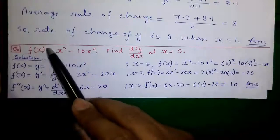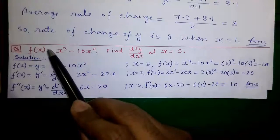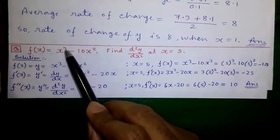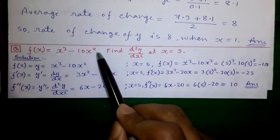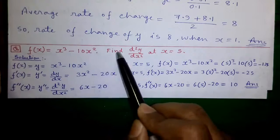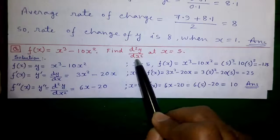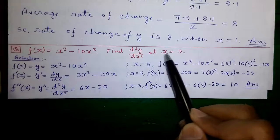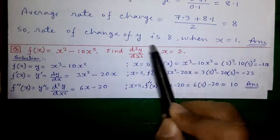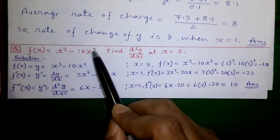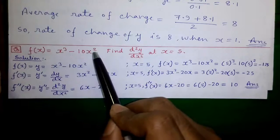Our f(x), or function of x, is x³ minus 10x². We have to find d²y/dx² at x equals 5, so we need to find the double differentiation of this function.